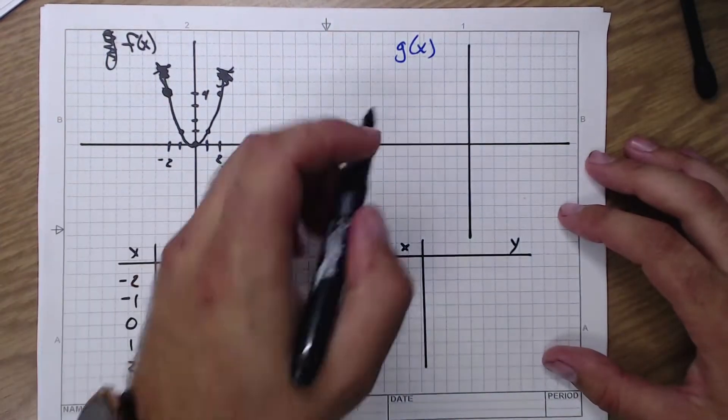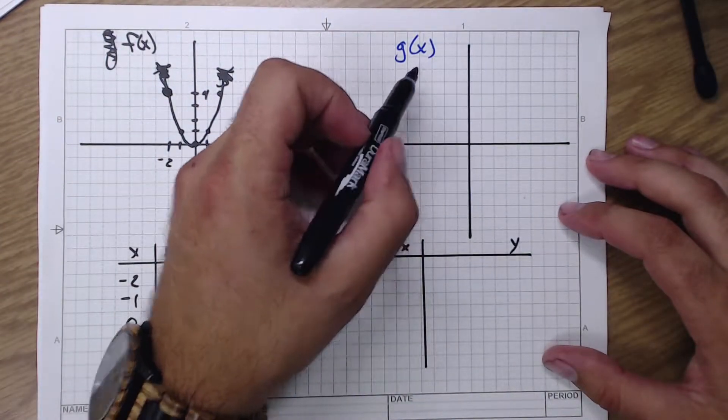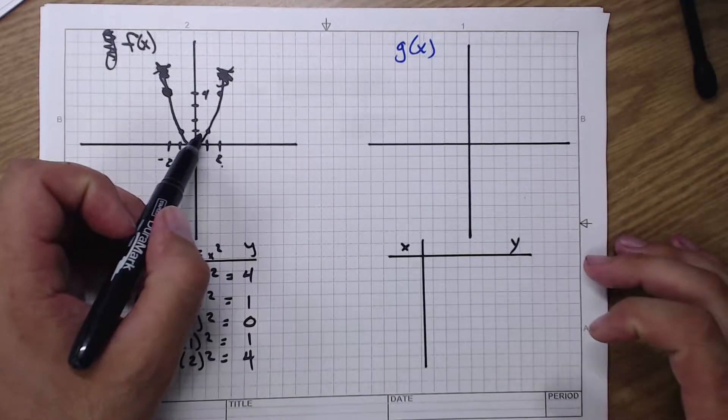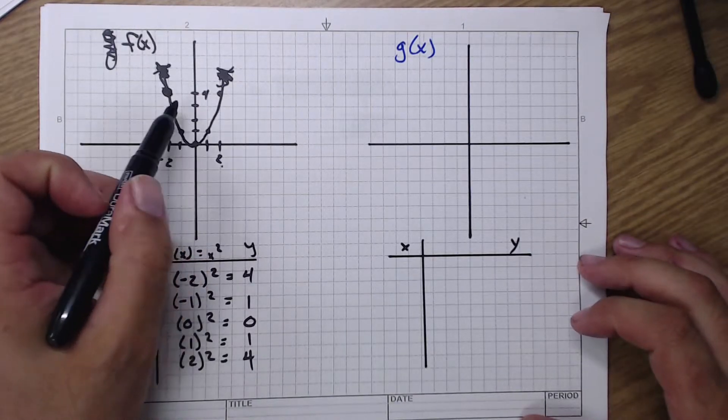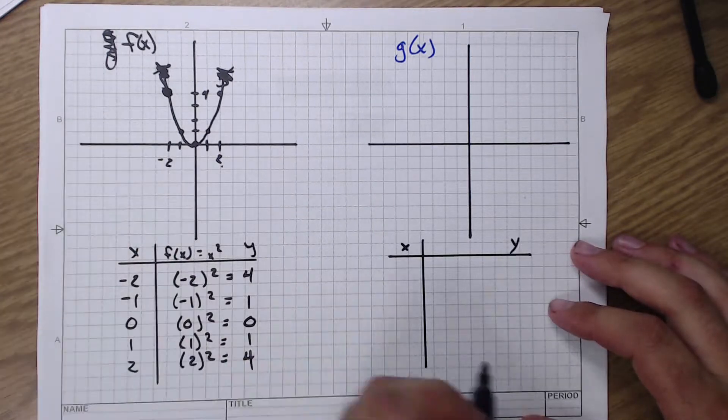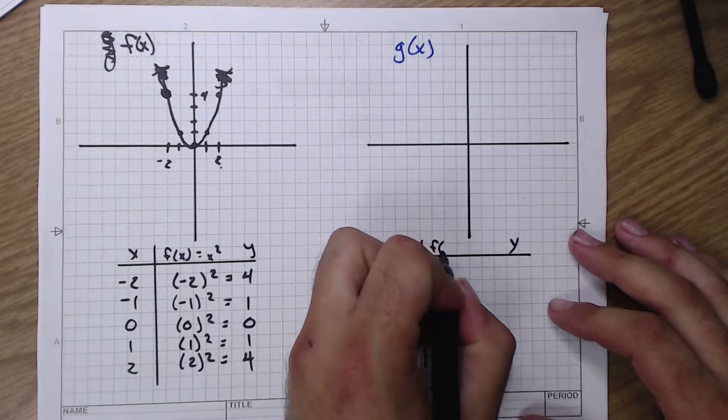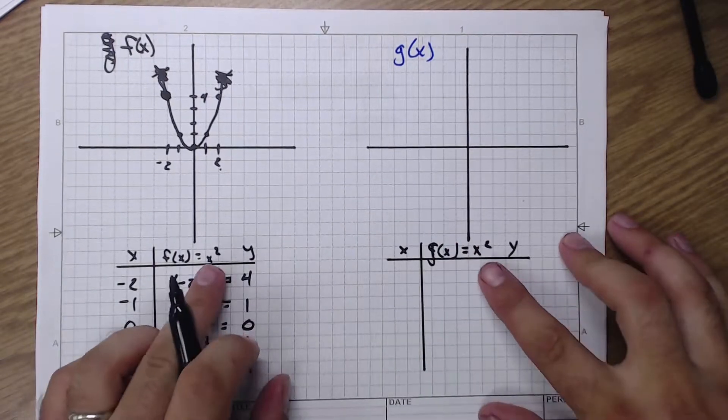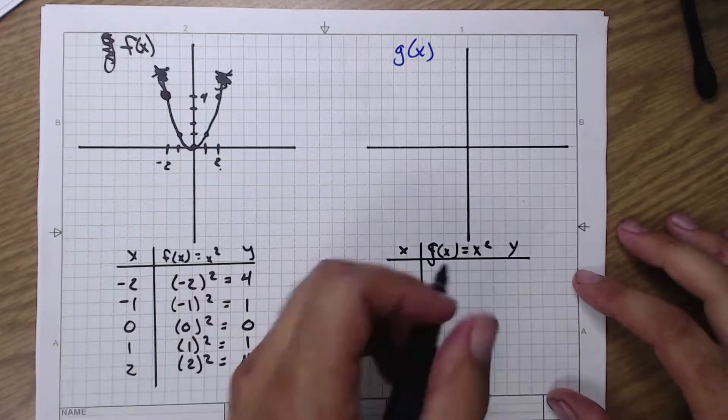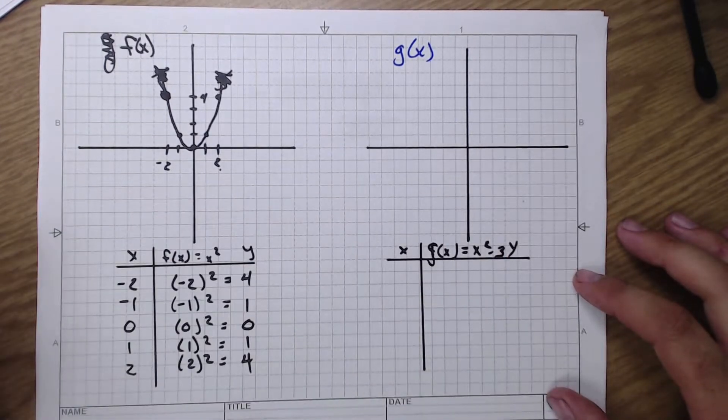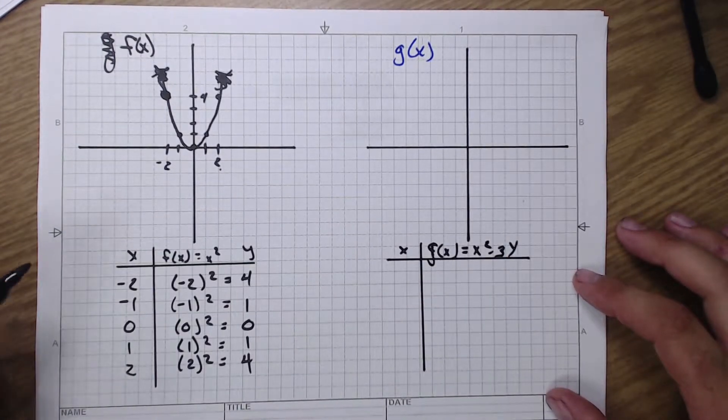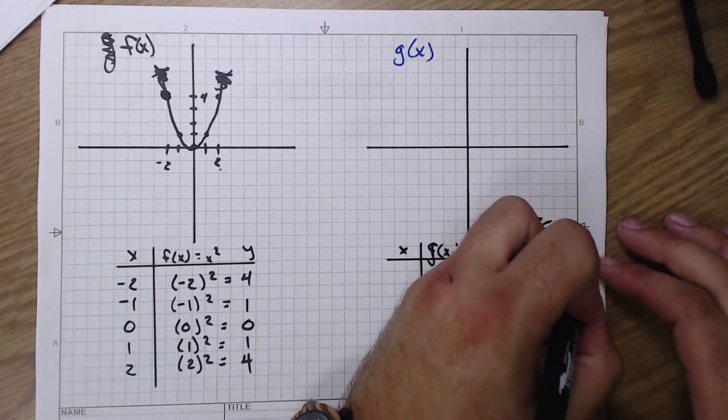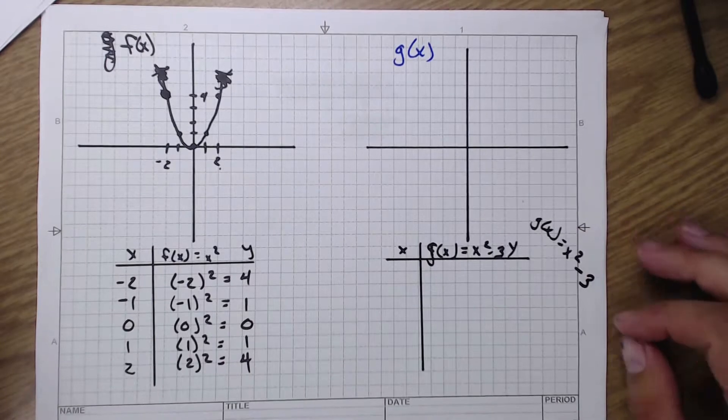All right. Now our new graph. The graph of g of x. It's going to be the same as this one, except we're going three units down. So whatever these are, I'm now going to shift down a little bit. And that ends up looking like g of x is going to be a same parent function, same x squared. But shifting down, we subtract three on the end. And that's what this graph is going to look like. g of x is x squared minus three.